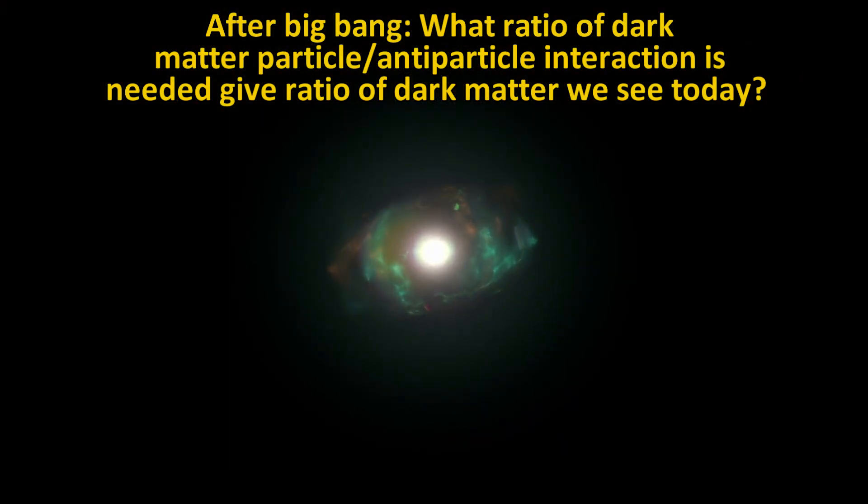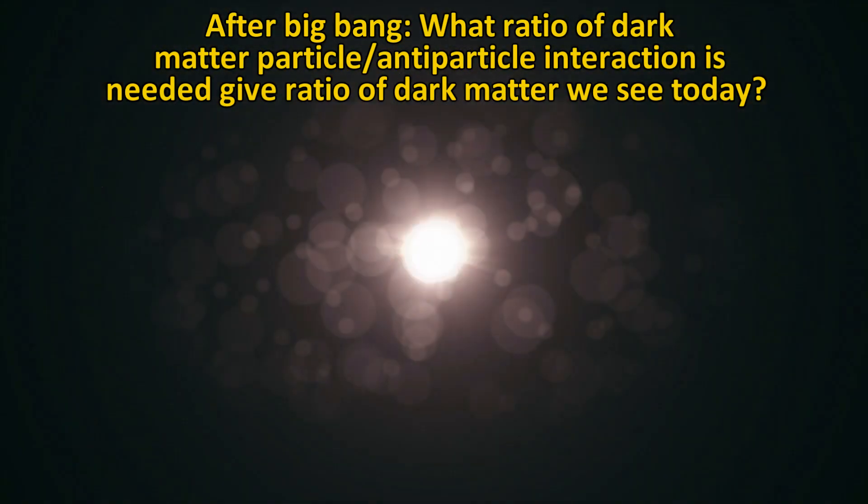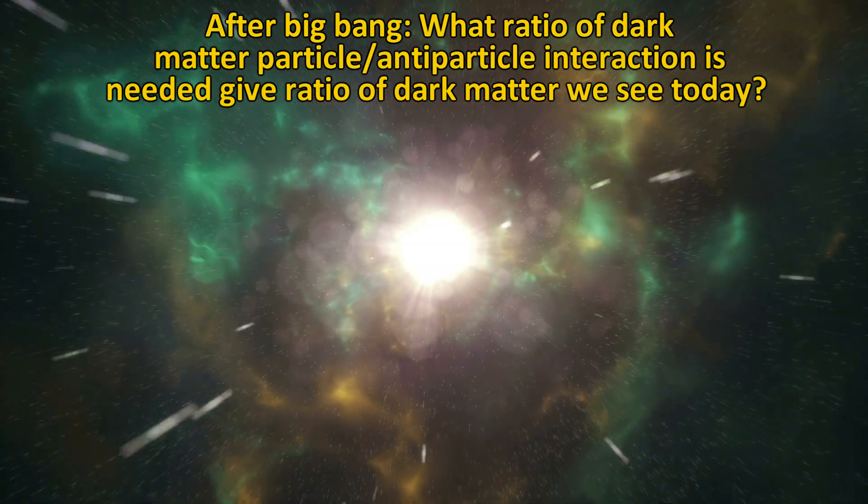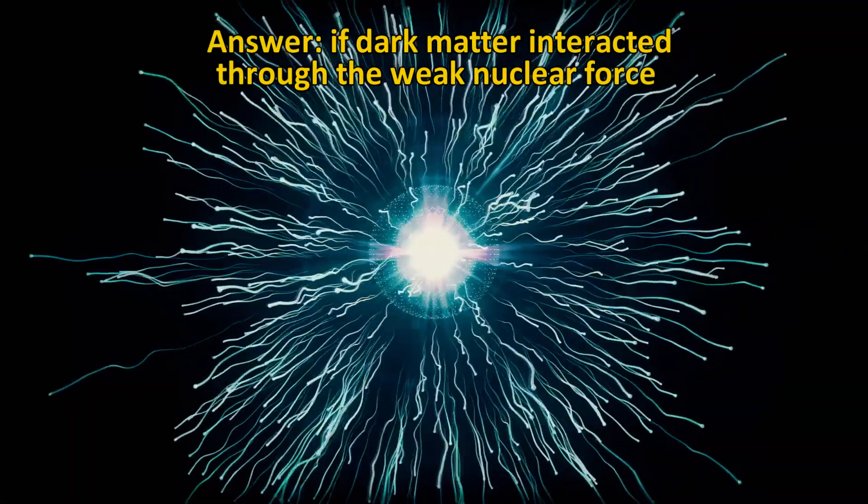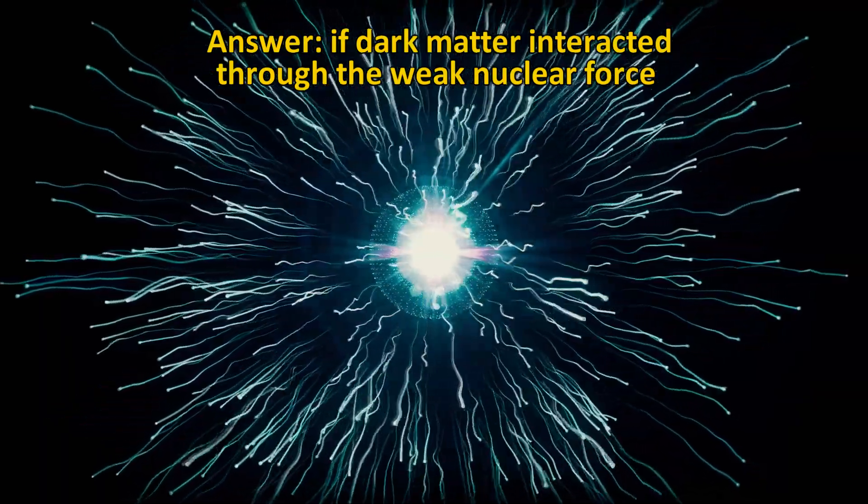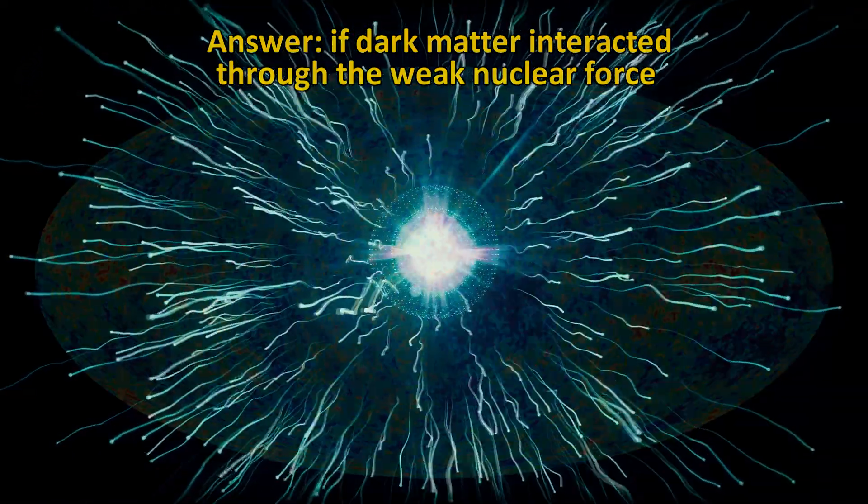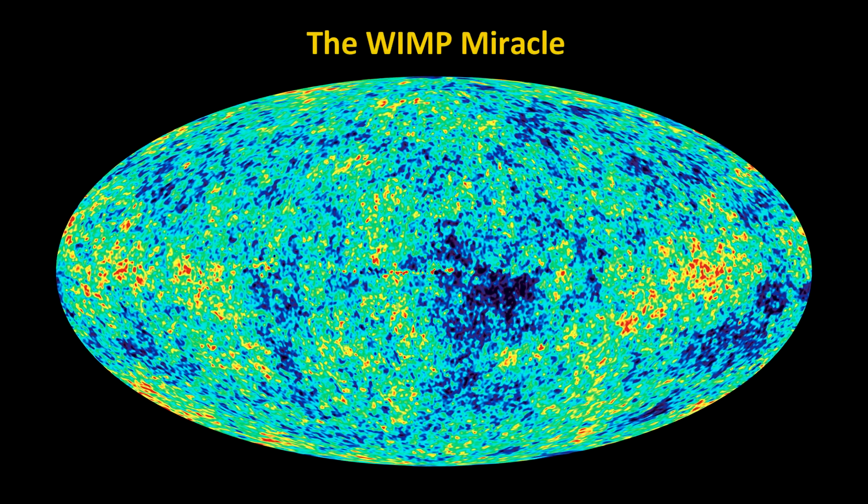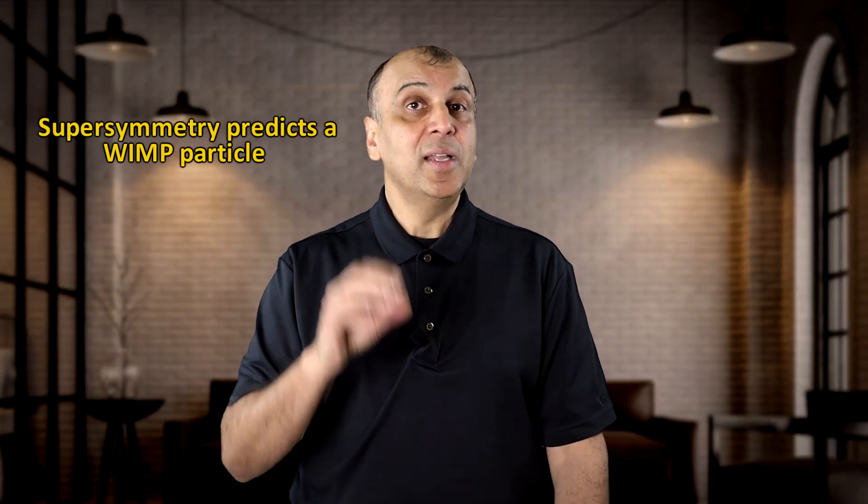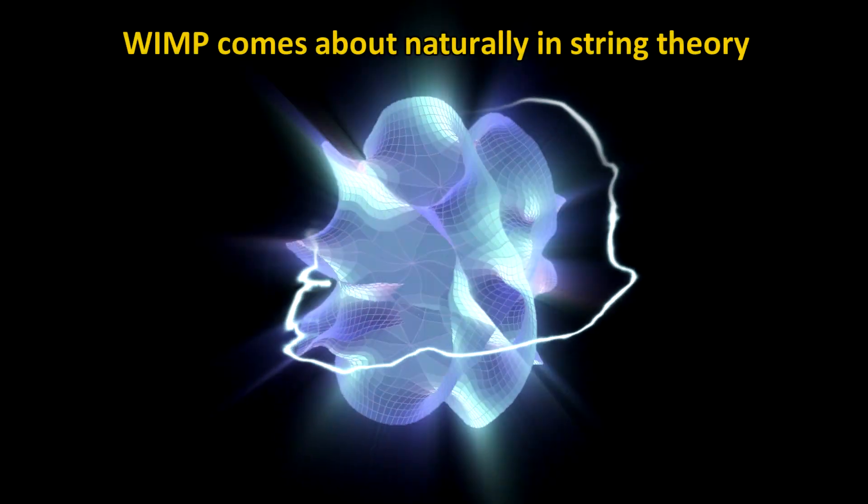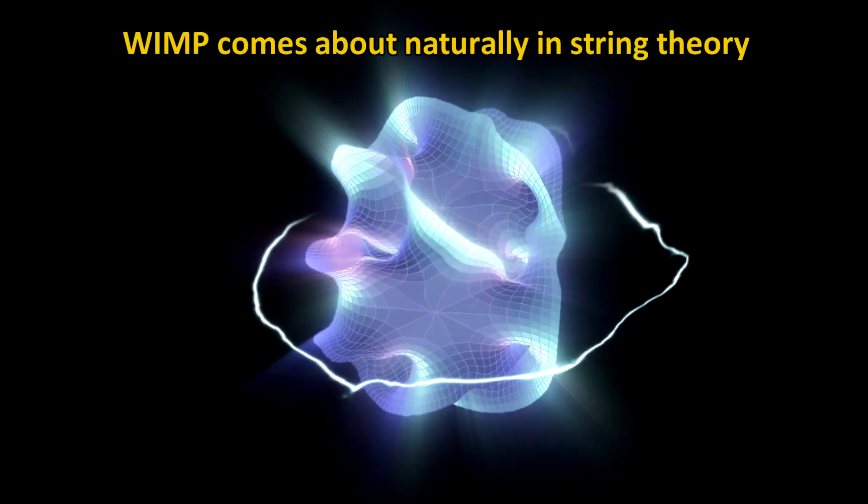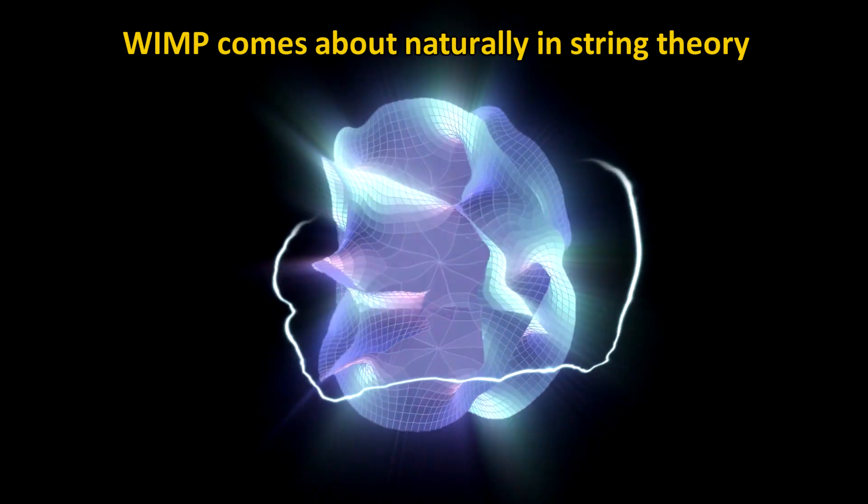Why would this particle need to interact through the weak nuclear force? Because it turns out that if we ask the question, what is the rate of interaction of dark matter particle and antiparticle annihilation that you would need to have to give us the correct ratio of dark matter that we observe today, the answer is that they would need to interact with the strength exactly equal to the strength of the weak nuclear force. This coincidence is called the WIMP miracle. And it so happens that there is a model in particle physics that predicts exactly such a particle. This model is called supersymmetry.